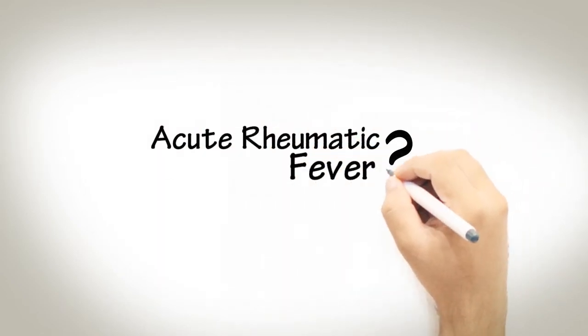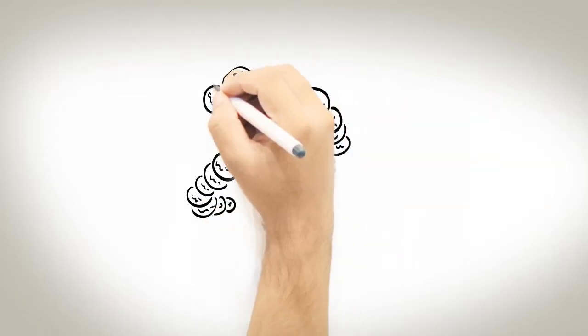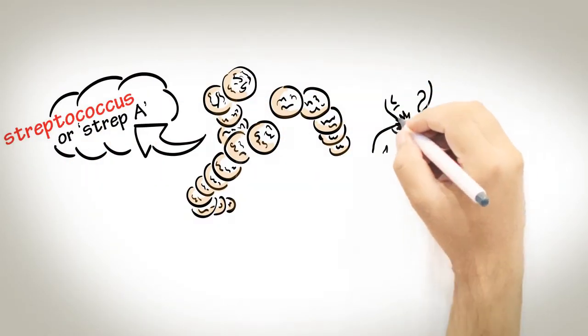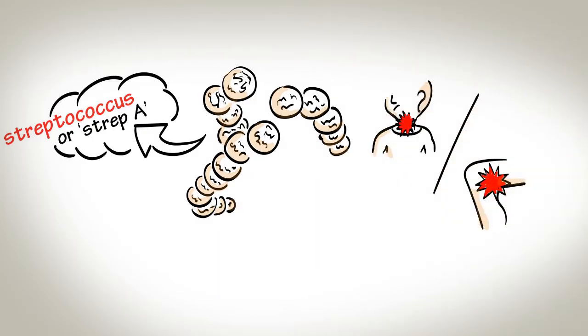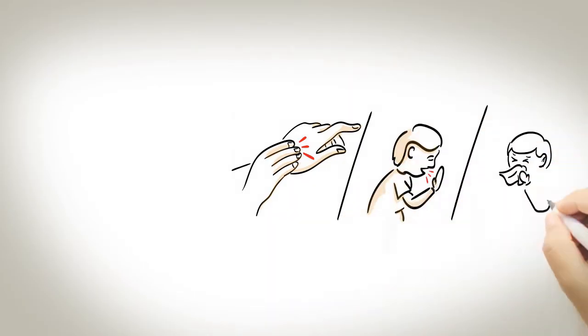What is Acute Rheumatic Fever? Acute rheumatic fever is an illness caused by a germ called Streptococcus or Strep A, which causes sore throats and skin sores. It can be passed between people by touching, coughing and sneezing.